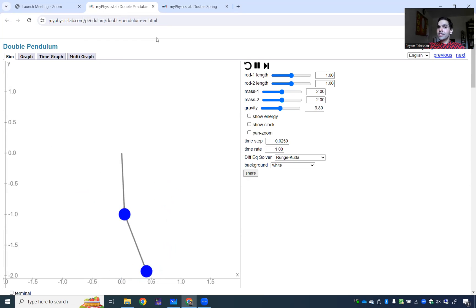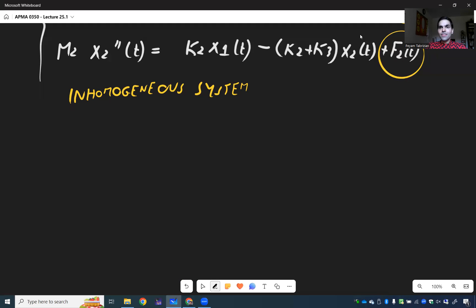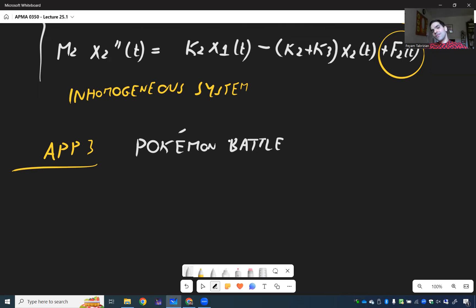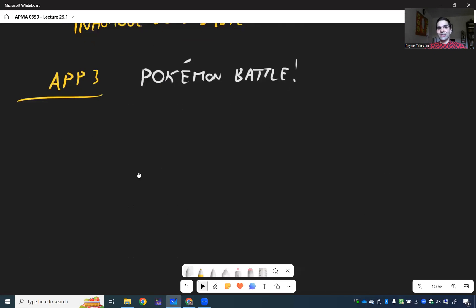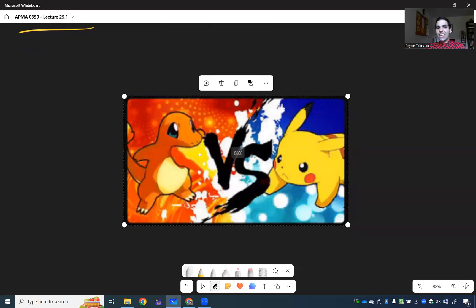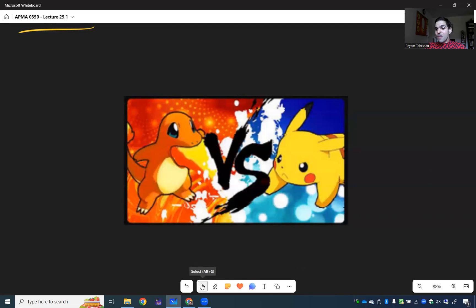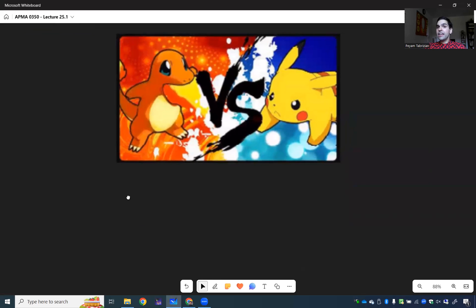Okay last but not least I want to show the last application. And with this I would like to welcome you to our third application which I think is the coolest and with this I would like to welcome you to Pokemon Stadium. So let's model a Pokemon battle using systems of differential equations. In this case we have Pikachu fighting against Charmander.